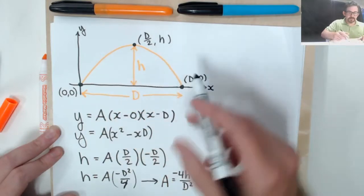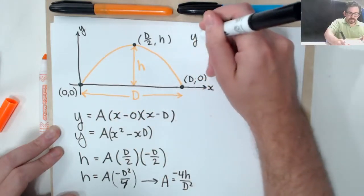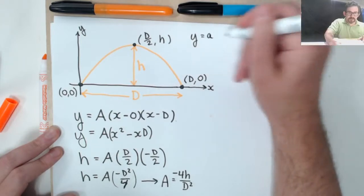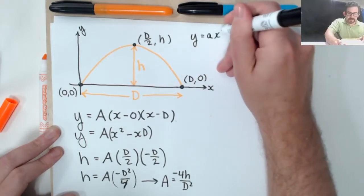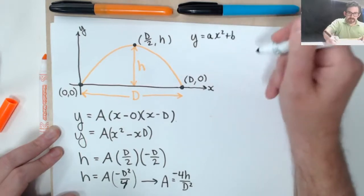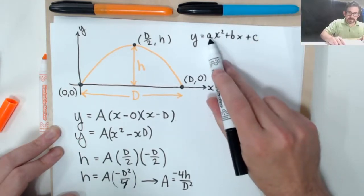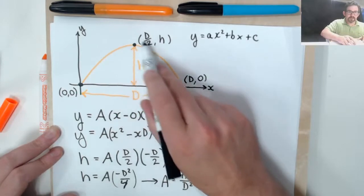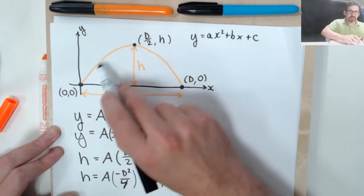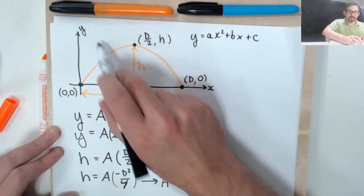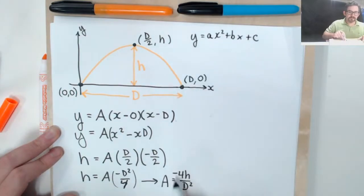Notice we're using a lowercase a here, ax squared plus bx plus c. This a needs to be negative if I'm going to have a frown or umbrella type instead of a cereal bowl or a smile type parabola. So it's good that this turned out negative.